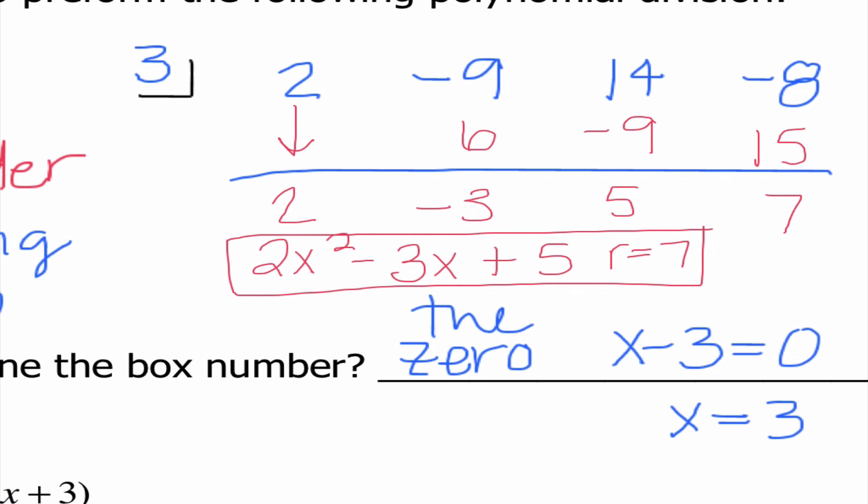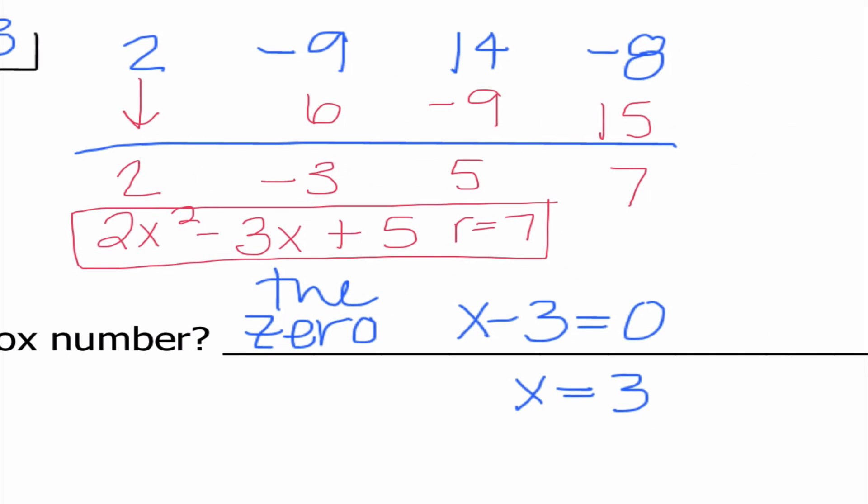So key thing here is I always start 1 degree lower than the original polynomial. The other way that I could write remainder of 7, I could write it as 7 over x minus 3. And I could add that since it's a positive 7. I would add that onto this expression.